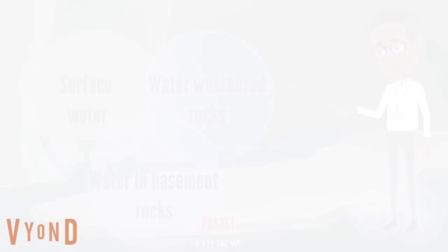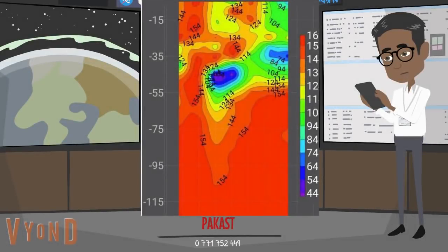Before water borehole drilling, it is important to predetermine the location of drilling, since aquifers are not common everywhere. To find water on the site, we use the method of electrical sounding. It is used when searching for groundwater and determining the position of aquifers, assessing the depth of their occurrence, which is necessary to select a location for water borehole drilling.